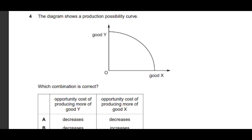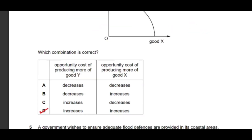Question number four: the diagram shows a production possibility curve — which combination is correct? Option D is the correct answer. The opportunity cost of producing more Y will increase, and the opportunity cost of producing more X will also increase, because a concave-to-the-origin graph shows increasing opportunity cost. A convex graph shows decreasing opportunity cost, and a straight line shows constant opportunity cost.